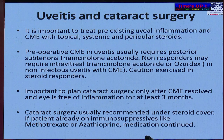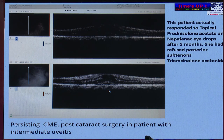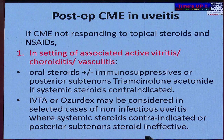CME is one of the leading causes of poor outcome post-cataract surgery. One case involved persisting CME post cataract surgery in a patient with intermediate uveitis; it responded to topical prednisolone acetate and nepafenac. However, most such cases require post-op sub-Tenon's triamcinolone acetonide. If CME is not responding to topical steroids and NSAIDs in the setting of associated active vitritis, choroiditis, or vasculitis, oral steroids, immunosuppressives, or posterior sub-Tenon's triamcinolone acetonide should be used. If systemic steroids are contraindicated, IVTA or Ozurdex may be considered.